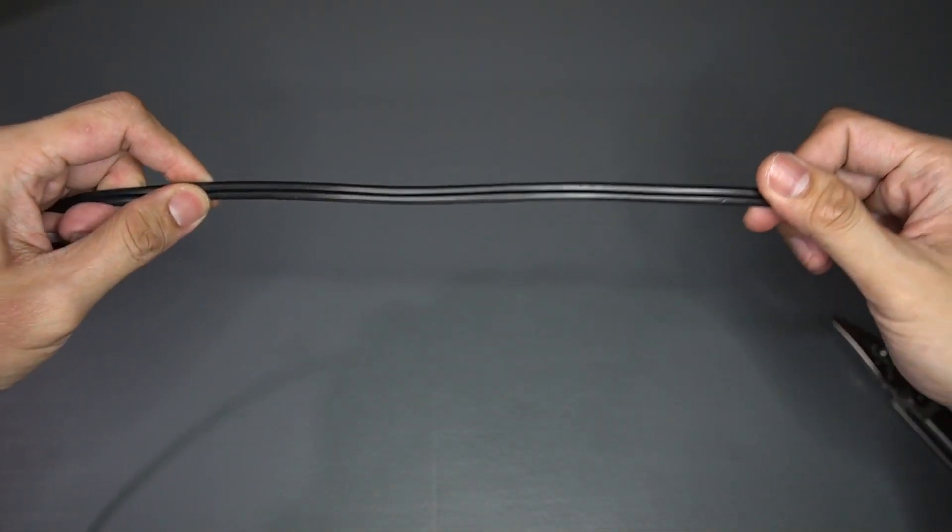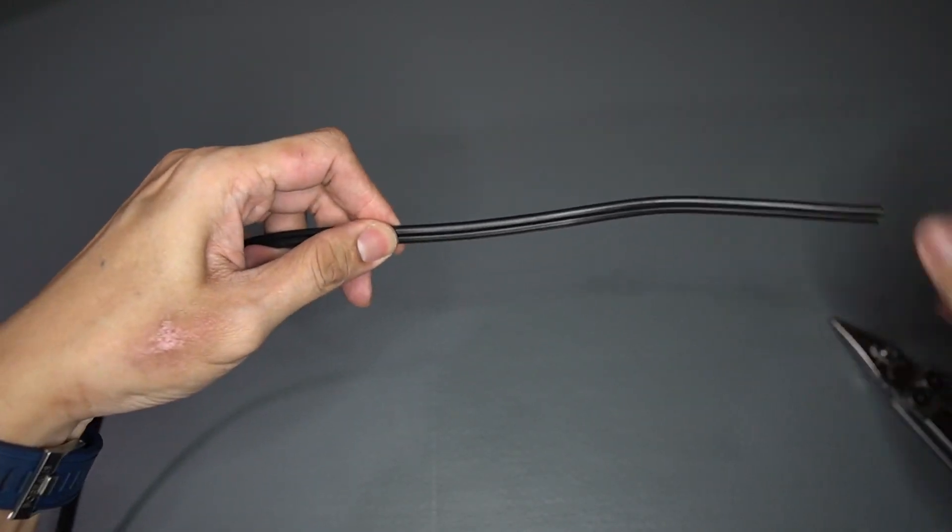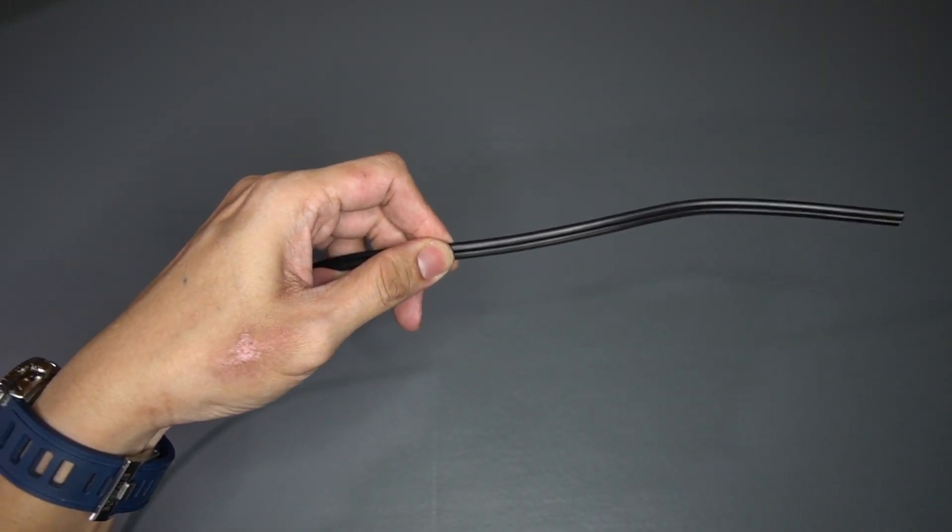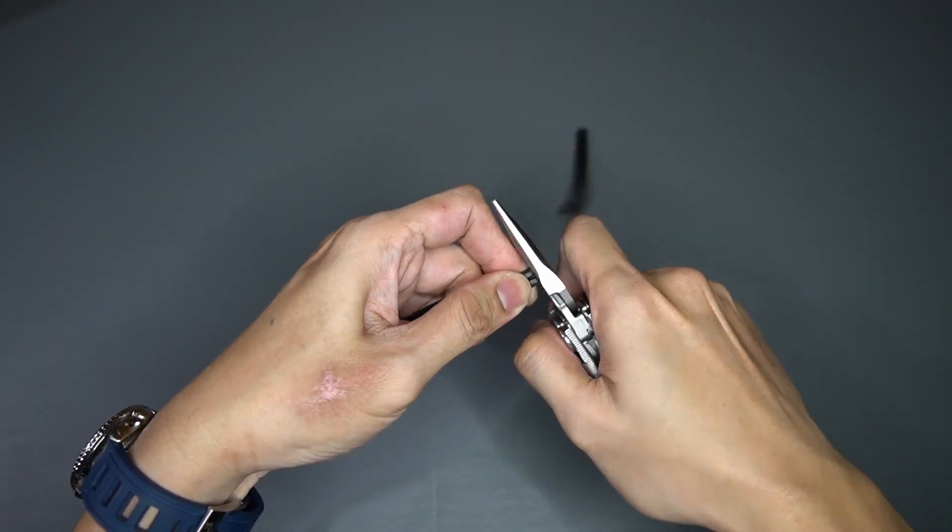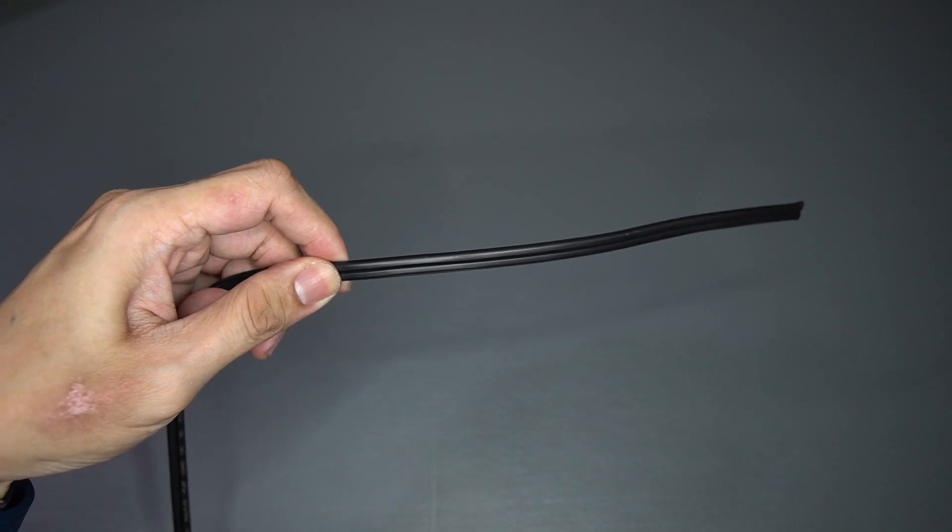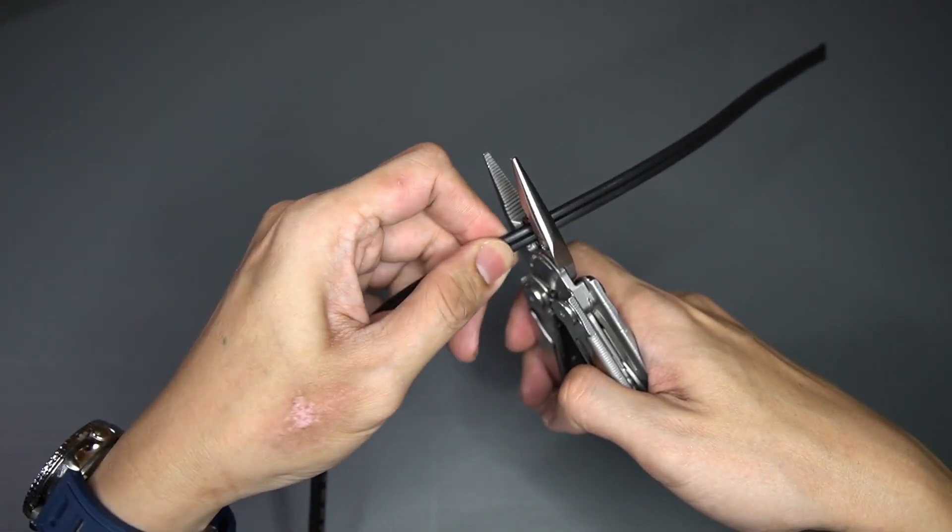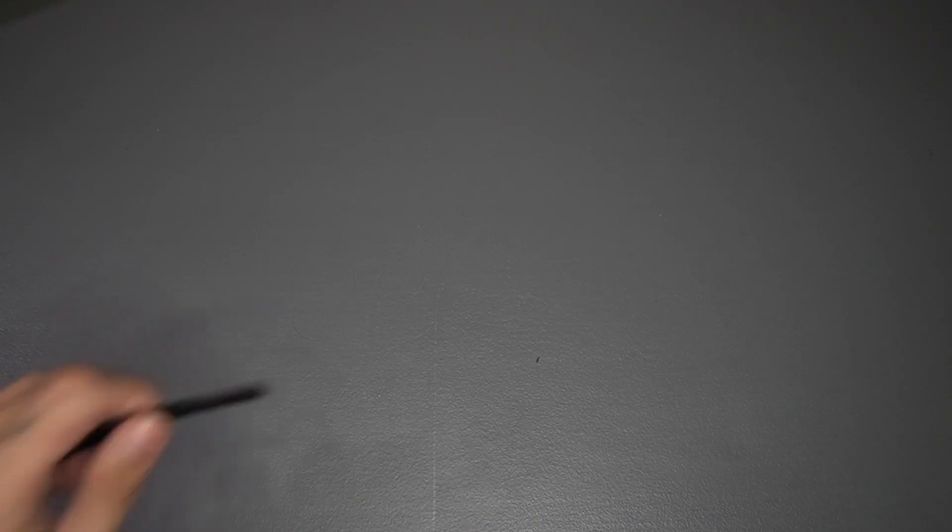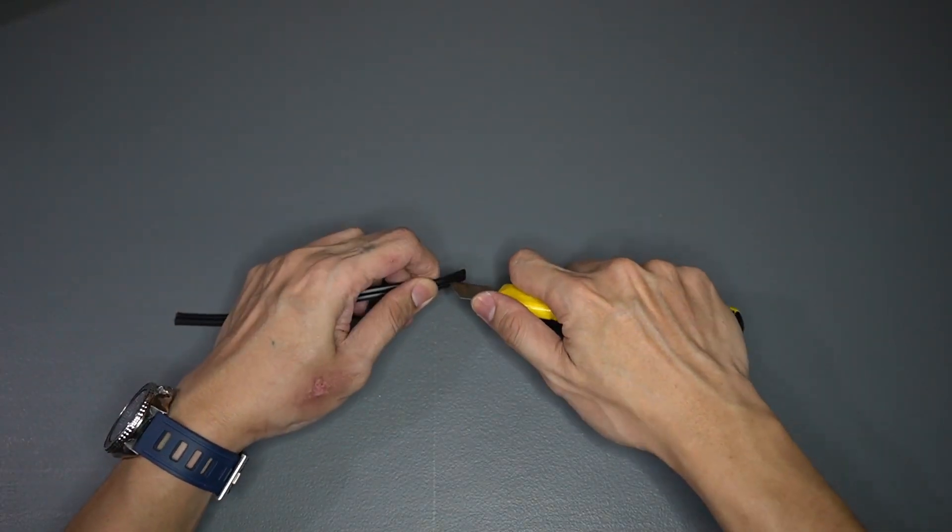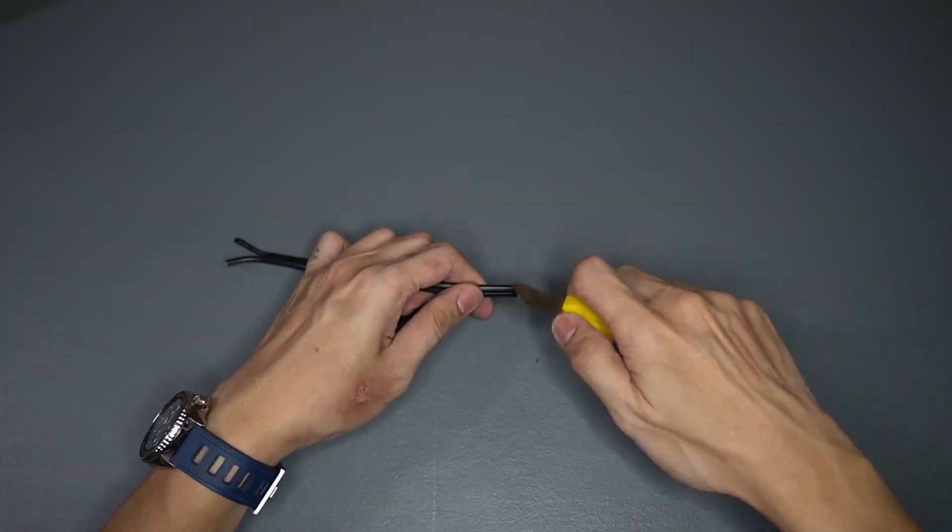Determine the length of the wire according to the distance between the socket and the device you're going to use. Cut the wire accordingly. One length for the input side and one length for the output side. Using the box cutter, split the two wire cord on both ends.